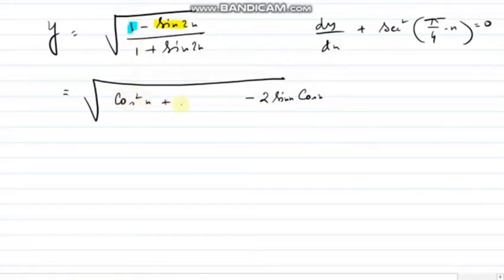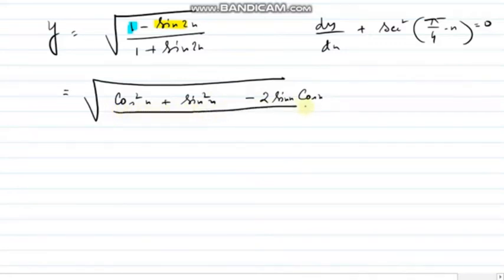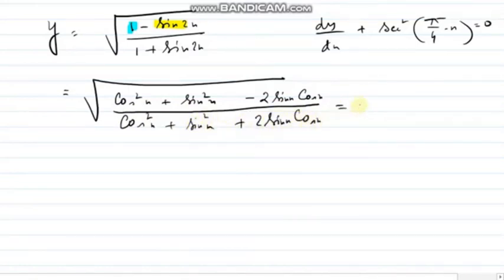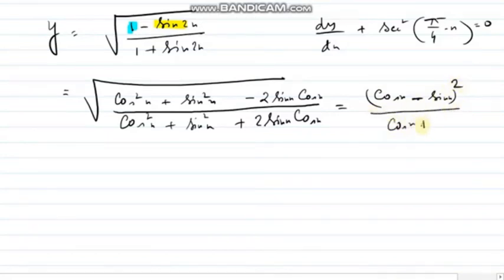If you write cos squared x plus sine squared x minus 2 sine x cos x, the formula we get is (a minus b) whole square. In the denominator similarly, cos squared x plus sine squared x plus 2 sine x cos x gives (cos x plus sin x) whole square. We have to find the root of this.